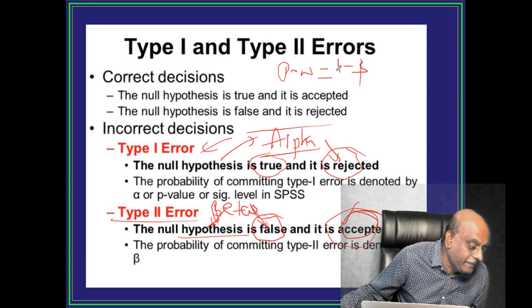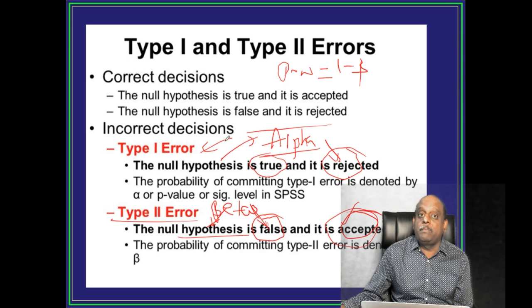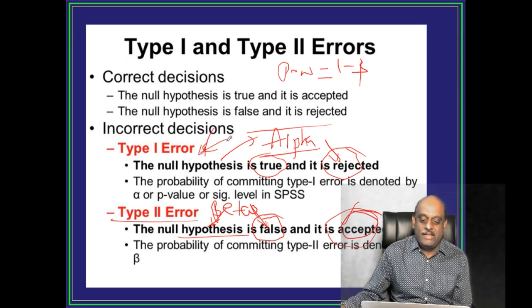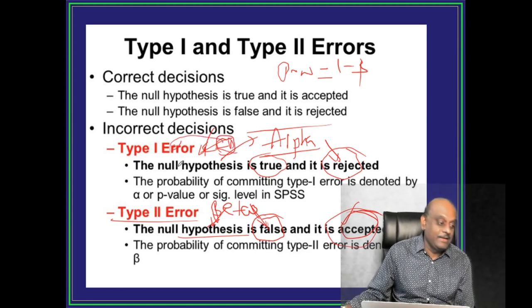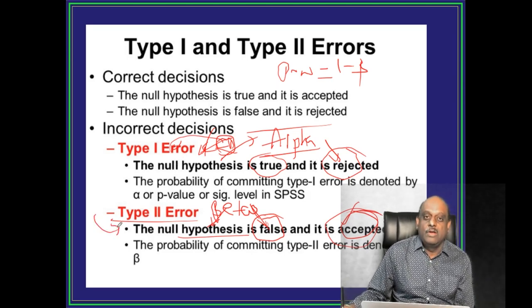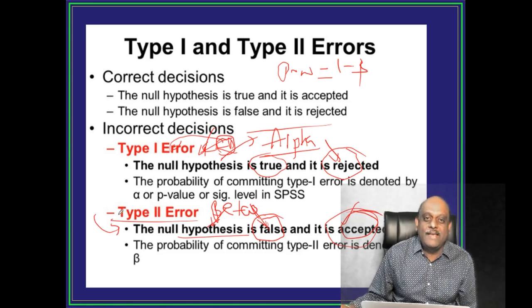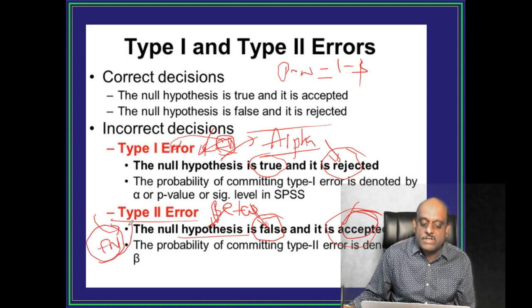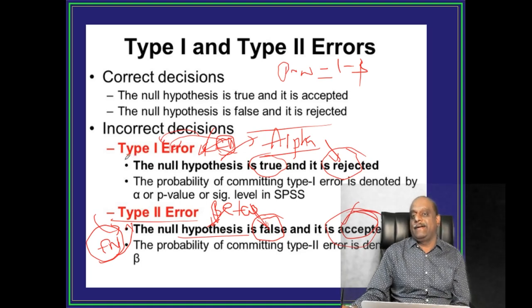Similarly Nagaradi reminding, male ko pakad ke unko peet ko dekh ke aap pregnant samajh rahe, that means you are false positively making him pregnant, that is type 1 error. Or female who is pregnant ko aap kahin re ki bhai, you became very obese bol ke, you are saying you are not pregnant, toh actually she is pregnant, that is false negative. False negatives are type 2 error, false positives are type 1 error, please don't forget.